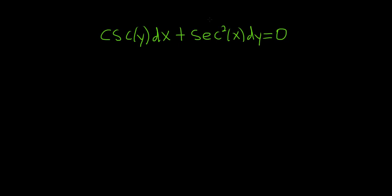So let's start by subtracting this piece here over to the right hand side. So we have csc(y)dx equals negative sec²(x)dy.